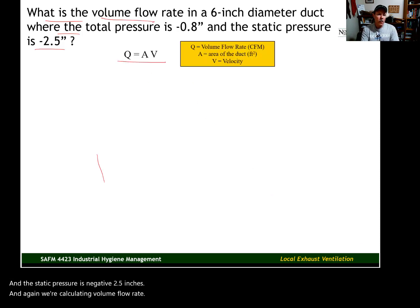We're calculating volume flow rate. Here is the formula for volume flow rate. Q is volume flow rate in cubic feet per minute. A is the cross-sectional area of the duct work, and that's going to have to be calculated in square feet.